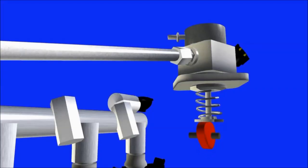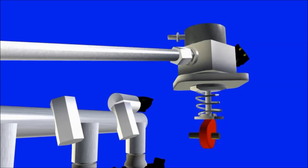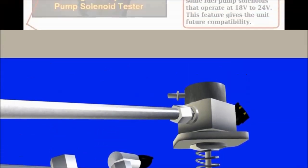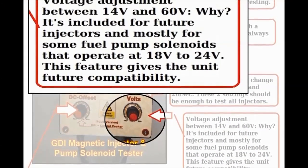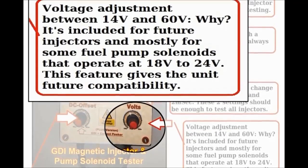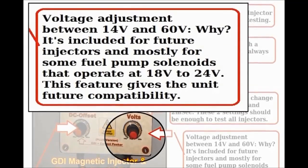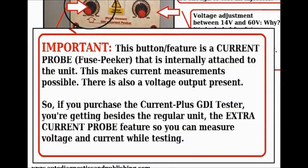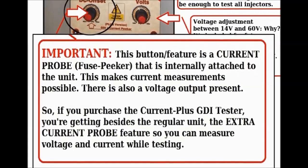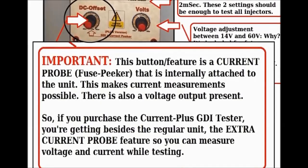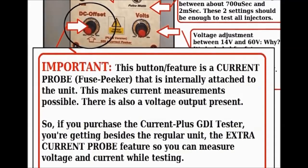The reason why this voltage adjustment was instituted in this particular tool is because some of the GDI high-pressure fuel pump valves — the one that's on top of the fuel pump driven by the cam at the engine — operate at around 18 to 25 volts. Since we're making the unit, we decided to make the voltage variable. That's why we came up with the variable voltage adjustment for the GDI injector tester. The GDI injector tester comes in two forms: the regular one and the plus version of the unit.